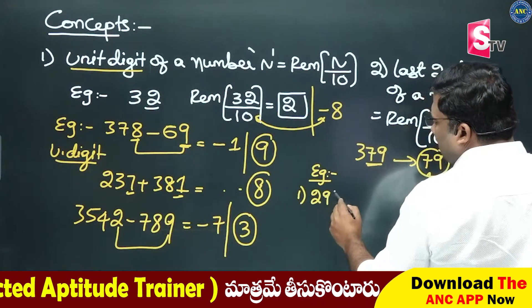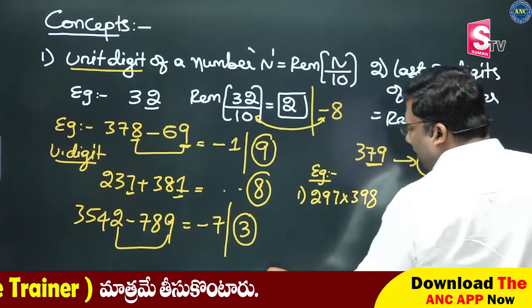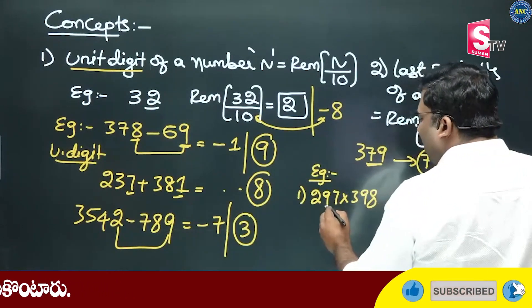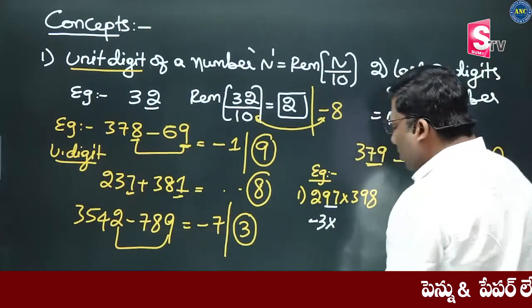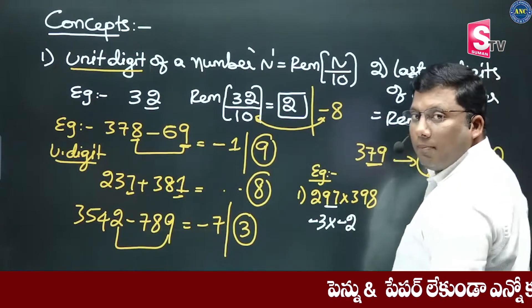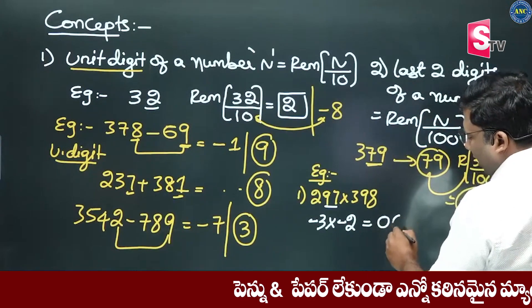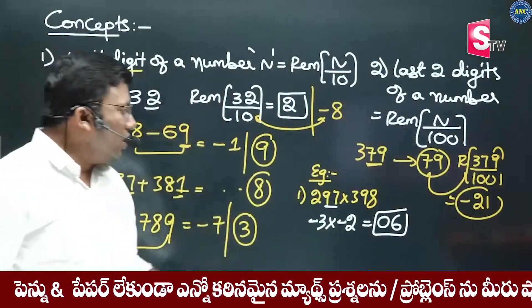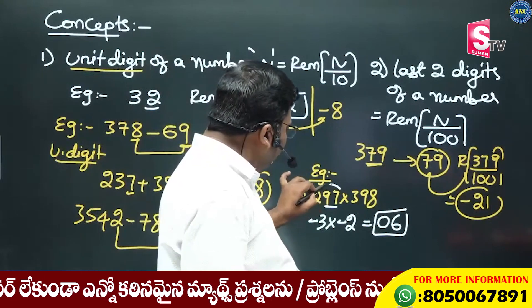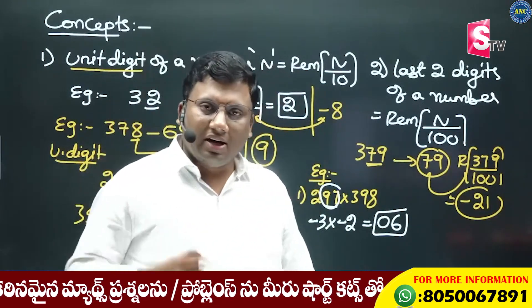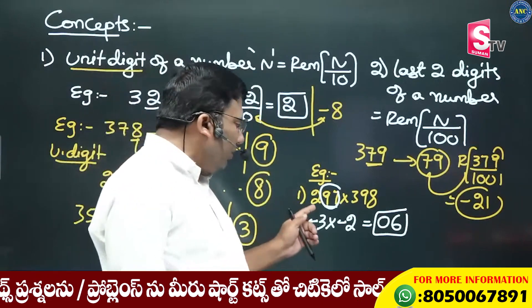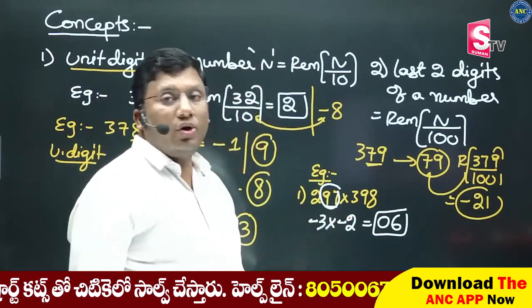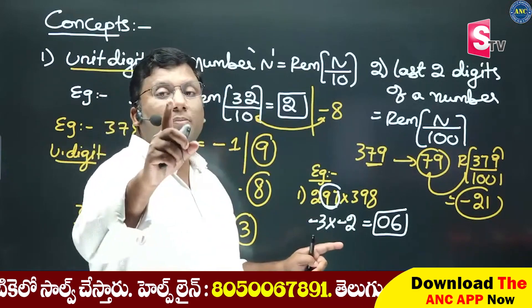Suppose you have 297 into 398. You will do the right calculation. 297 into 398: 97 divided by 100, remainder minus 3. 98 divided by 100, remainder minus 2. Minus 3 into minus 2 is 6, so the last two digits are 06. Only the last two digits matter here.